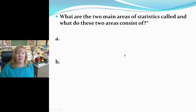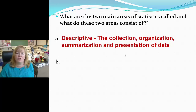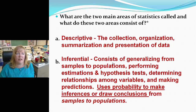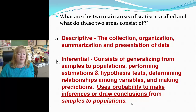What are the two main areas of statistics and what do they consist of? Descriptive statistics involves the collection, organization, summarization, and presentation of data. Inferential statistics is the big one — it consists of generalizing from samples to populations, performing estimations and hypothesis tests, determining relationships among variables, and making predictions. It uses probability to draw conclusions from samples to populations — if it's true for a small sample, it's inferred to be true for the whole population.